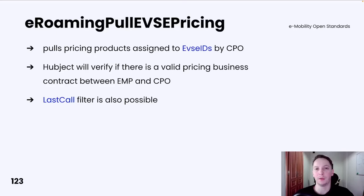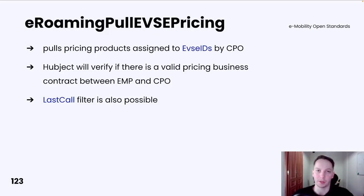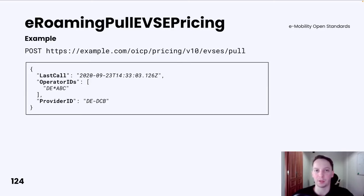The eRoaming pull EVSE pricing operation allows the EMP to know exactly how pricing products are assigned to EVSE IDs by the CPO. Similar to the previous operation, Hubject will verify if there is a valid pricing business contract between the CPO and EMP. The request is very simple: you need to specify your provider ID as well as a list of operator IDs you are interested in, and the lastCall parameter can be provided for filtering.